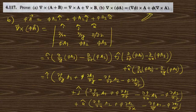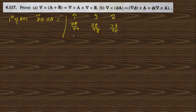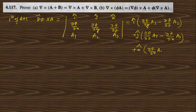Now we prove the right-hand side. The first term is grad φ × a. grad φ = (∂φ/∂x) î + (∂φ/∂y) ĵ + (∂φ/∂z) k̂, crossed with a = (a1, a2, a3). Expanding this determinant gives î(∂φ/∂y · a3 − ∂φ/∂z · a2) + ĵ(∂φ/∂z · a1 − ∂φ/∂x · a3) + k̂(∂φ/∂x · a2 − ∂φ/∂y · a1).